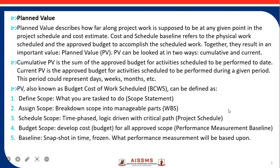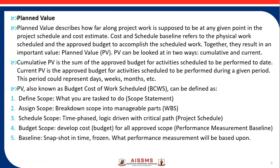The budgeted cost of work scheduled defines the scope — what you are tasked to do, that is the scope statement. Assign the scope — break down the scope into manageable parts, that is the WBS. Then schedule the scope — time-phased logic driven with critical path — the project schedule. Develop the cost for all the approved scope. And finally the baseline, which is the snapshot in time which is frozen — that is the performance measurement baseline. So that is planned value, also called the budgeted cost of work scheduled, or BCWS.